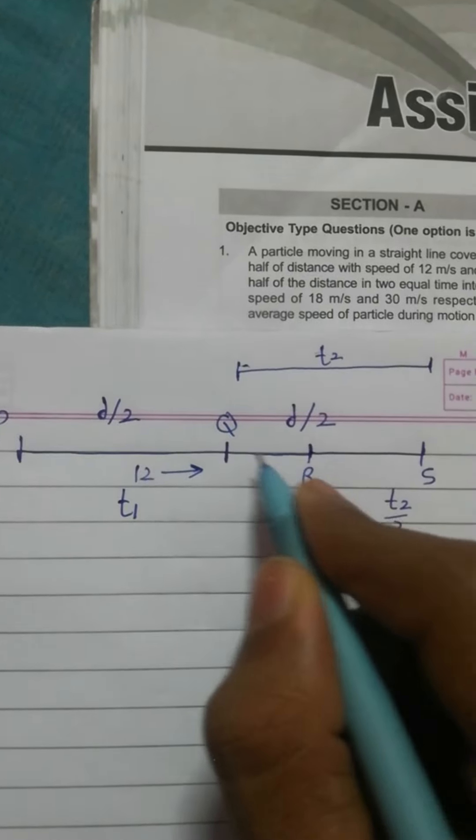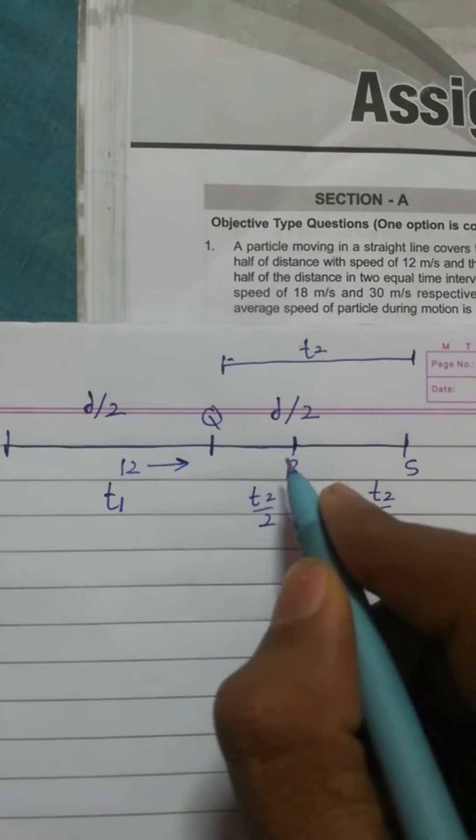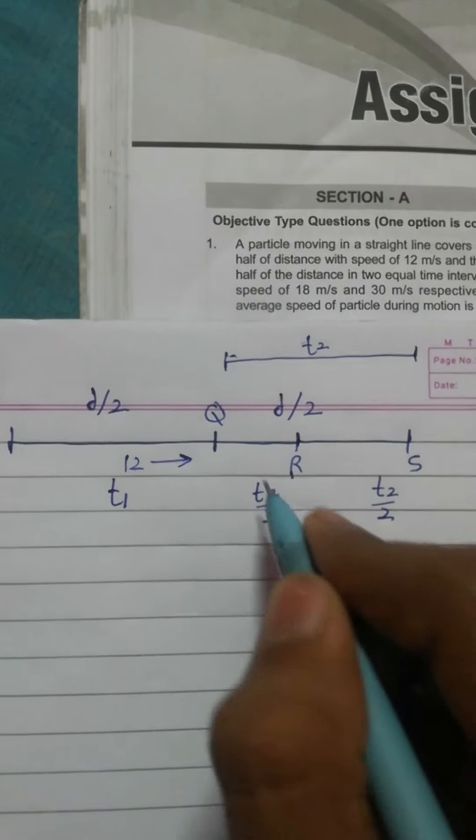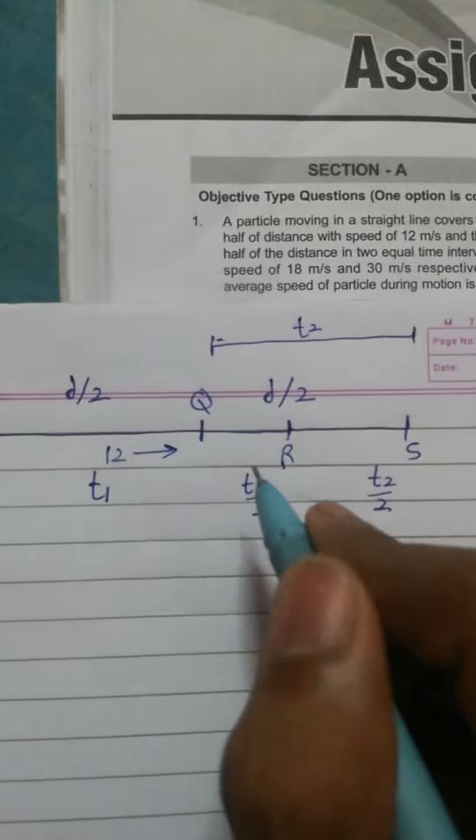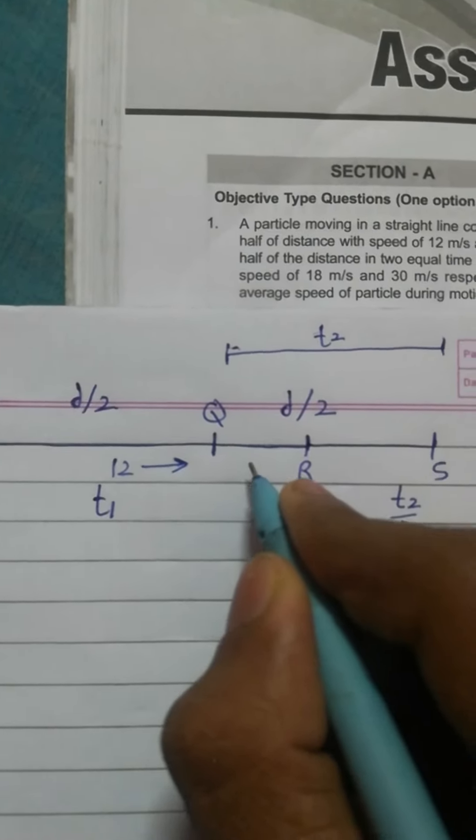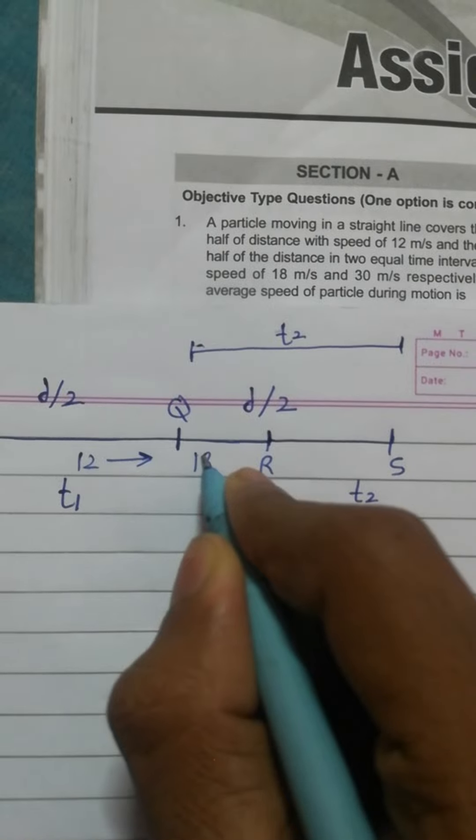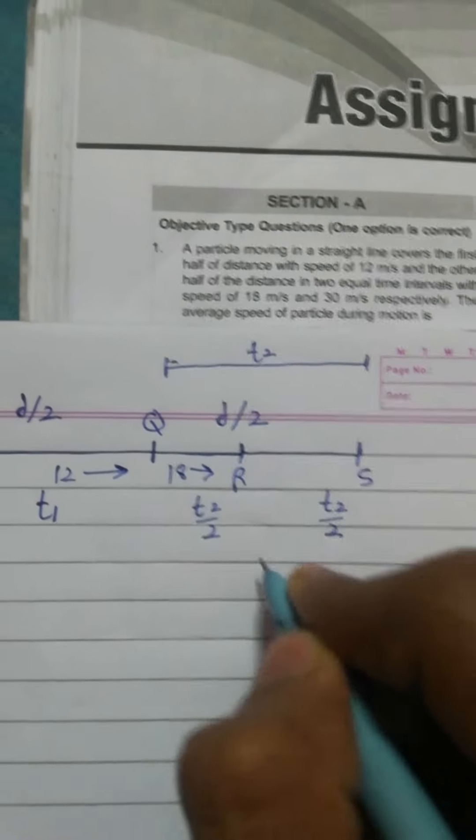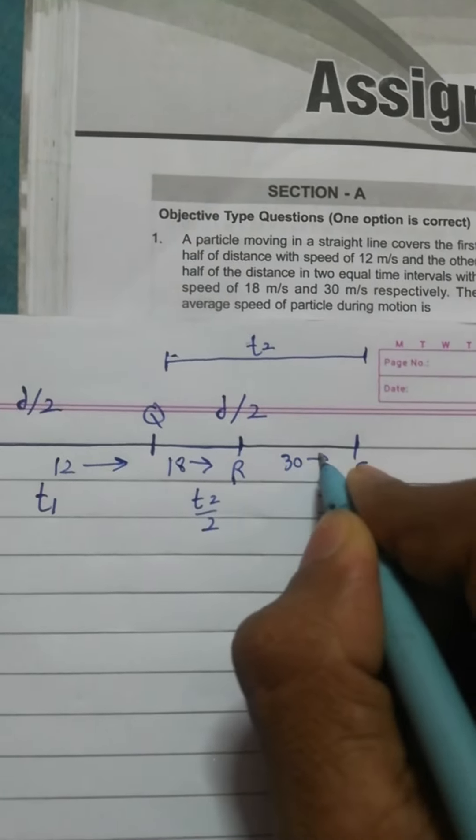And the distance QR is unknown, and RS is unknown. But we know the speed between Q to R is given as 18, and RS is given by 30.